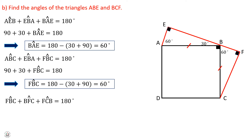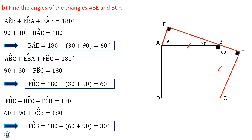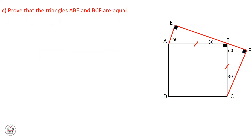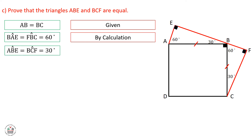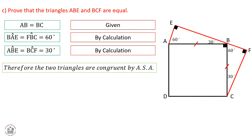Now, we can find angle C by using the same concept — the sum of angles of a triangle equals 180. So angle B plus angle F plus angle C in triangle BFC equals 180, giving angle C equal to 30 degrees. Part C: we need to prove that triangles AEB and BCF are congruent. We know sides AB and BC are equal from the coded properties. By calculation, angles BAE and FBC both equal 60 degrees, and angles ABE and BCF both equal 30 degrees. Therefore, the two triangles are congruent by Angle-Side-Angle.